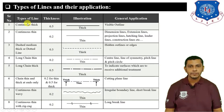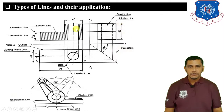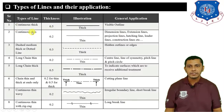Let us start with the first one: continuous thick line. It is 0.5 mm in thickness. To draw this line we use an HB pencil; it is darker in shade and is used to show visible outlines of the object. Here I have shown the orthographic views — front view, top view, and side view of the given object. The darker shade lines are the continuous thick lines, representing the visible outlines of the object.